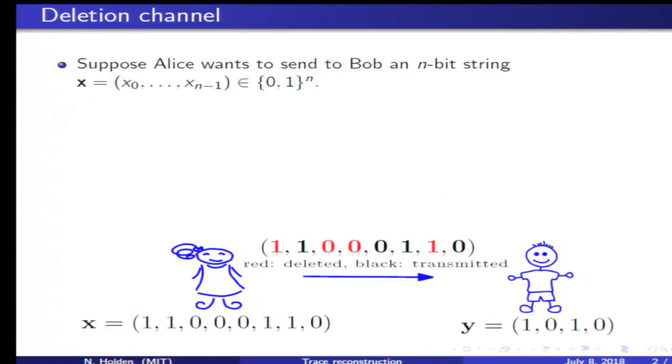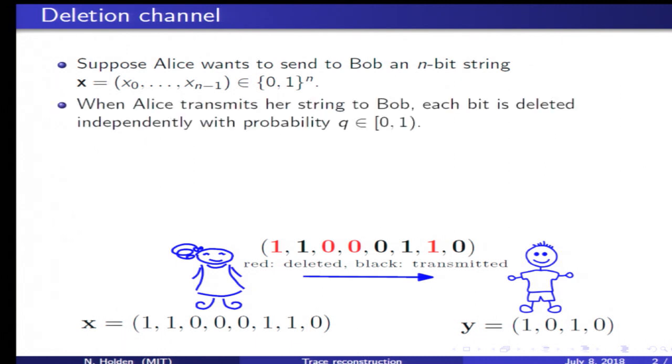We consider Alice and Bob. Alice has a bit string of length n which she wants to send to Bob. When she's sending it to Bob, each bit is deleted independently with some probability q. In the figure, the red bits represent the deleted bits, while the black bits represent the transmitted bits.